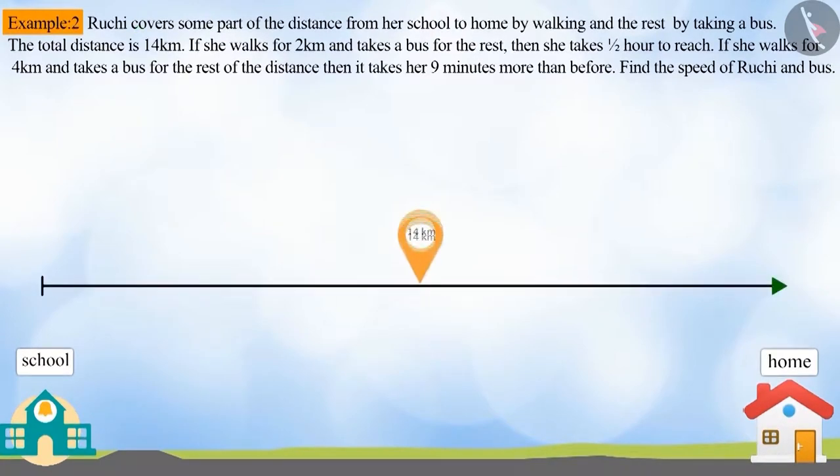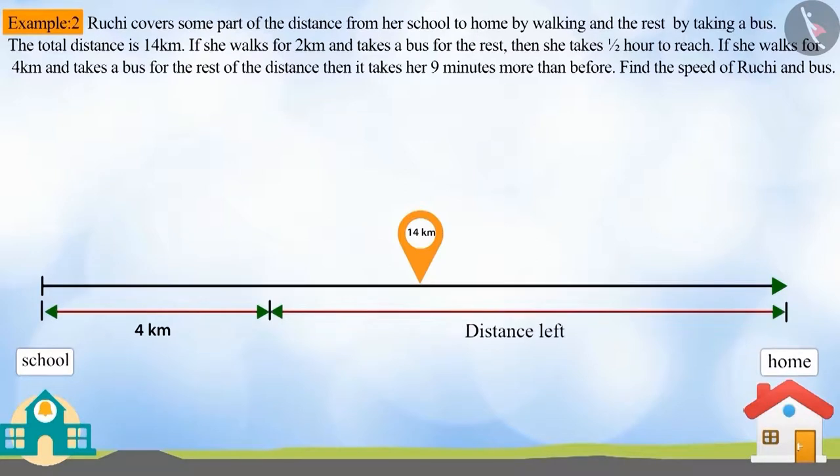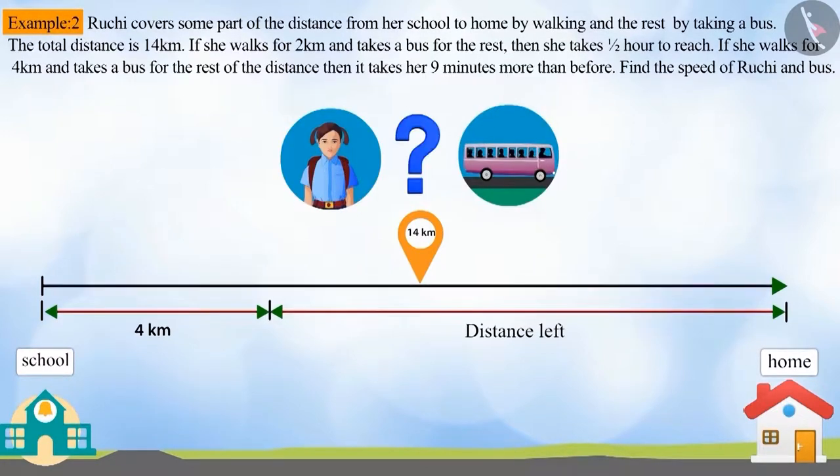Ruchi covers some part of the distance from her school to home by walking and the rest by taking a bus. The total distance is 14 km. If she walks for 2 km and takes a bus for the rest, then she takes half an hour to reach. If she walks for 4 and takes a bus for the rest of the distance, then it takes her 9 minutes more than before. Find the speed of Ruchi and the bus.